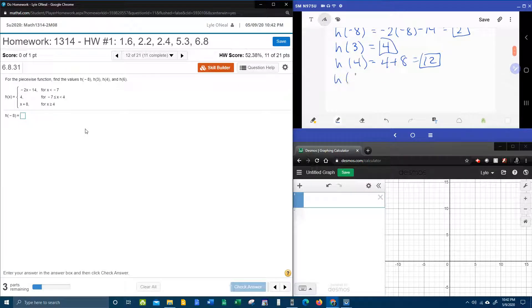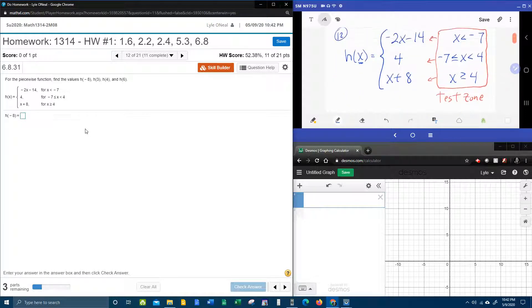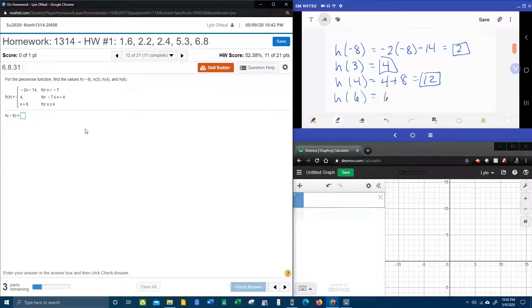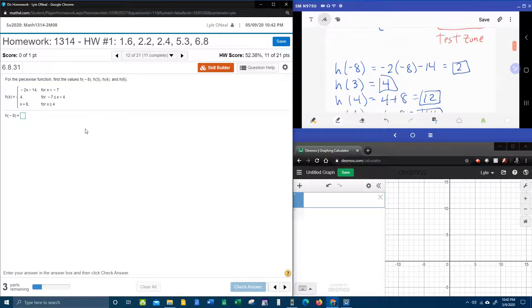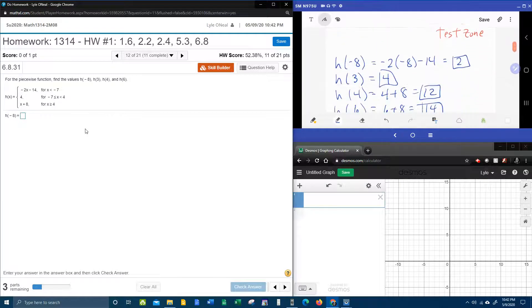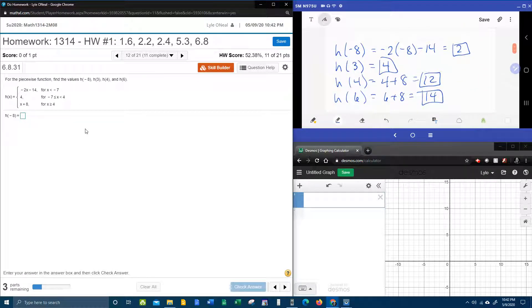And we have one more piece to do. That is h of six. And not wasting your time, six is greater than or equal to four, so the bottom piece is true, and so that's what we do. Six plus eight is fourteen. And so that is how a piecewise function works. For any value of x, you have to take it to the test zone and test it to see where to put it. And again, did you see for each function value there can be only one y.